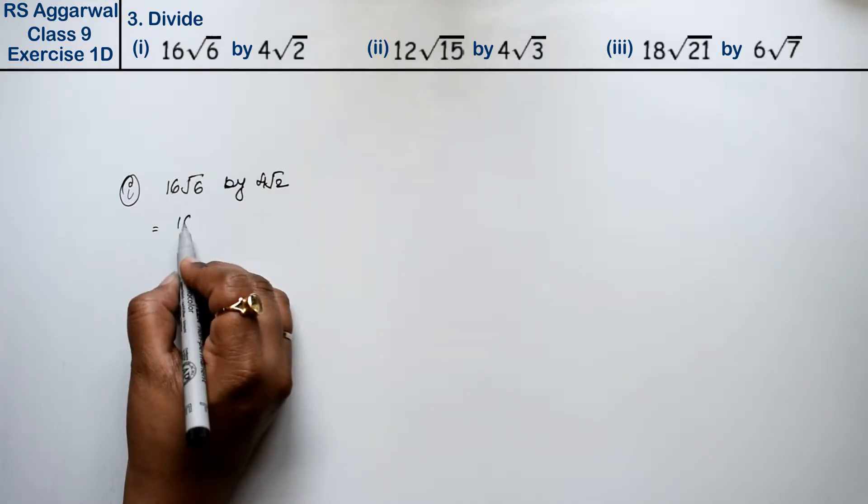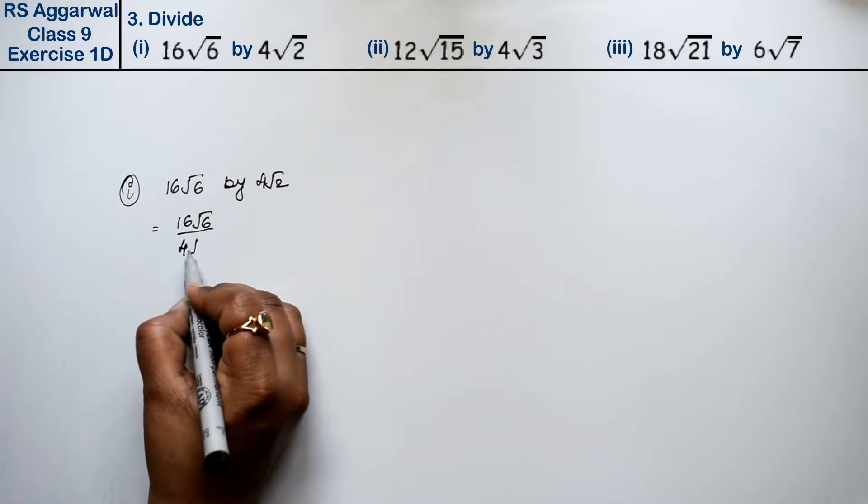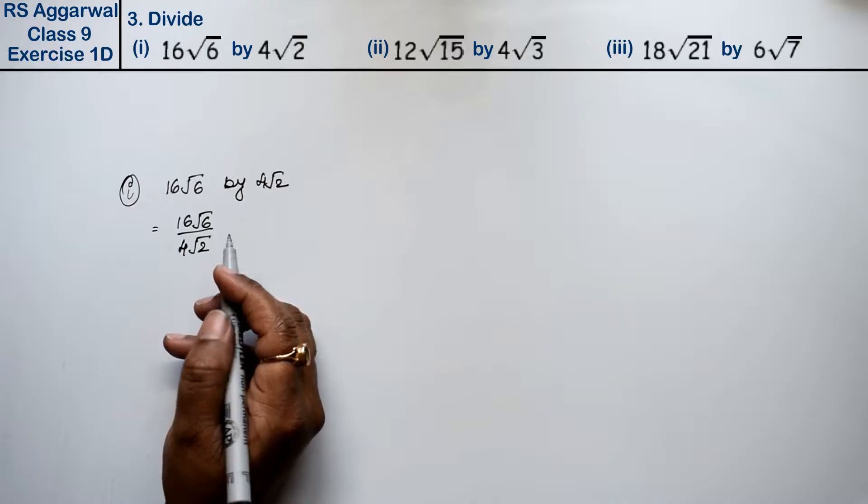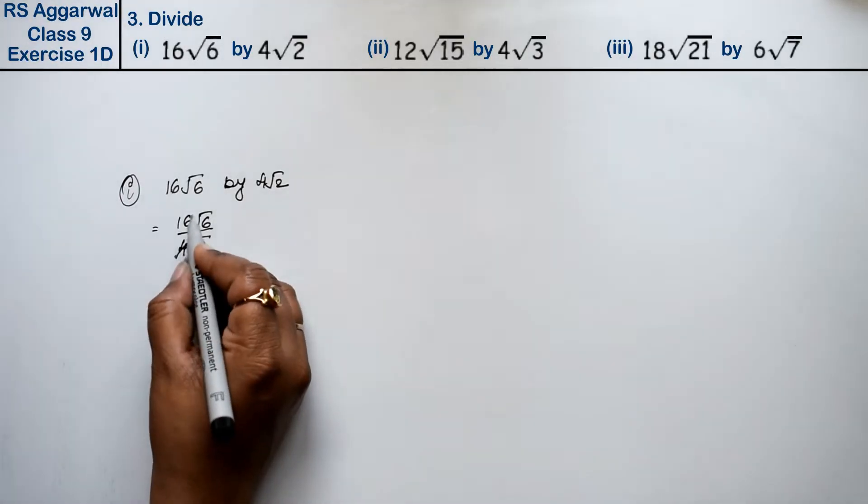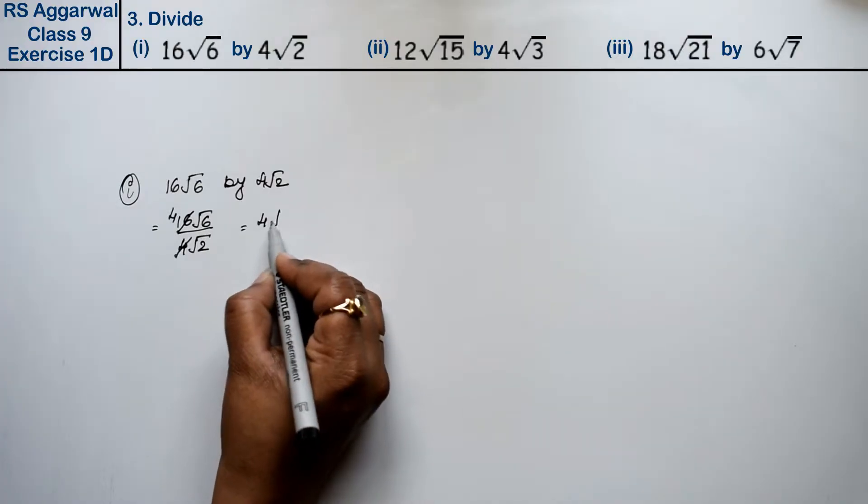16√6 divided by 4√2. Under root is only under root. Now, 4 times 4 is 16. So what can we write for √6?